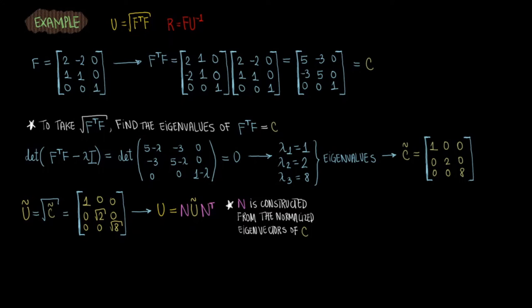After normalizing those eigenvectors, you can place them in order of increasing eigenvalues corresponding to the eigenvalues you found previously on each column of N.